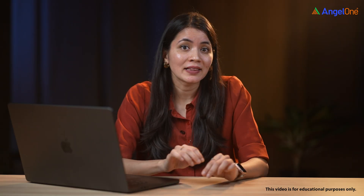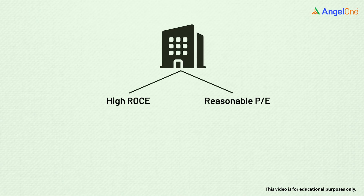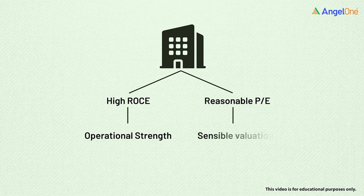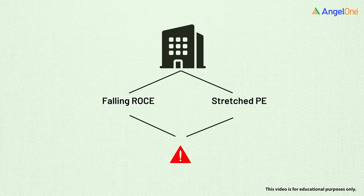That's how you separate value creators from value destroyers. But efficiency is just one side of the story — the market doesn't just look at how well a company uses capital, it also cares about how much investors are willing to pay for those earnings. That's where valuation metrics like the price-to-earnings ratio come in. A company with high ROCE and a reasonable PE usually signals both operational strength and sensible valuation. But if ROCE is falling or PE is stretched, it's a warning sign — either the business is losing efficiency or the market's expectations have run ahead of reality.